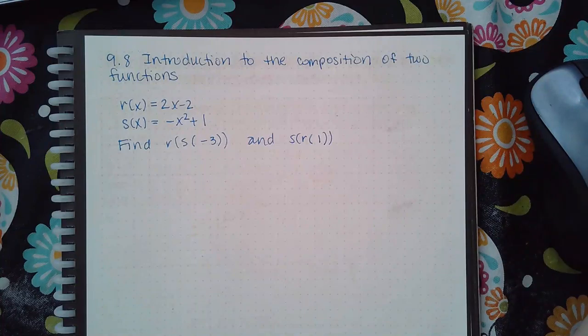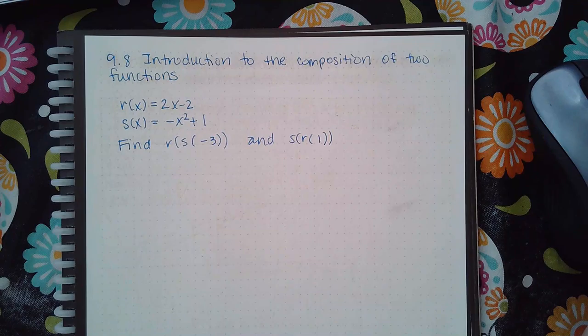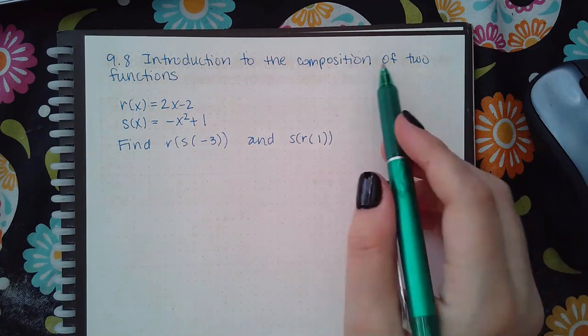Here we have 9.8, introduction to the composition of two functions. If r(x) = 2x - 2 and s(x) = -x² + 1, a composition of functions basically means you're going to plug one function into the other.